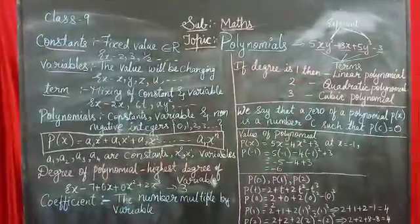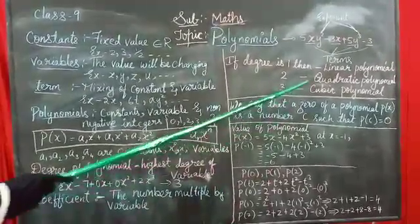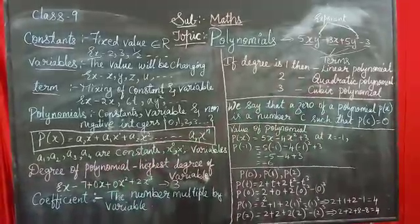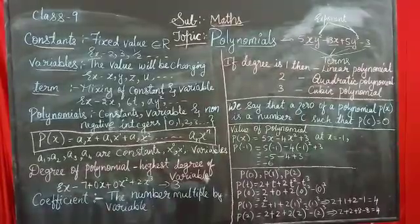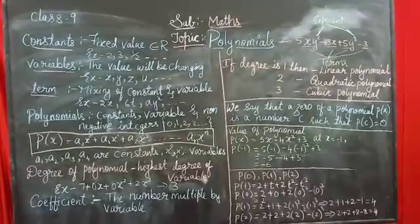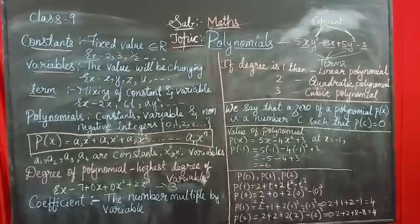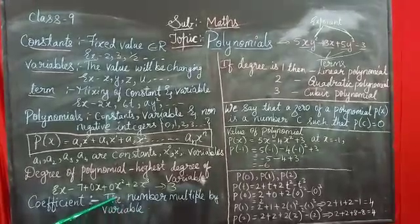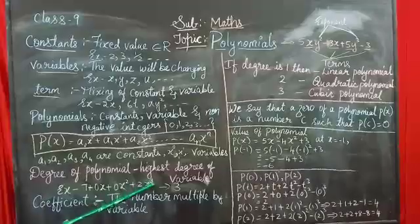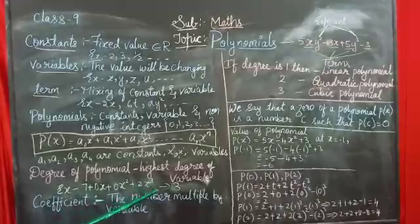If the degree of a polynomial is 1, then it is called a linear polynomial. If the degree is 2, then the given polynomial is a quadratic polynomial. And similarly, if the degree is 3, then it is a cubic polynomial. Coming back to the example: the degree is 3, therefore the given polynomial is a cubic polynomial.